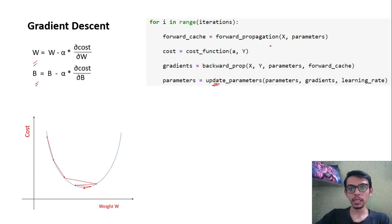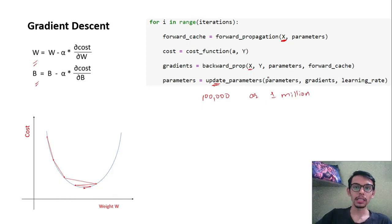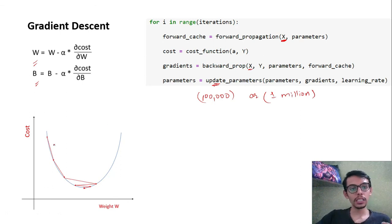The problem with gradient descent is that we are passing the entire dataset at once. What if the dataset size is too large — for example 100,000 or 1 million samples? In that case, to update weights our model will have to process this huge amount of data and it will take a very long time, so the entire training will be very slow where each step takes a long time to process.